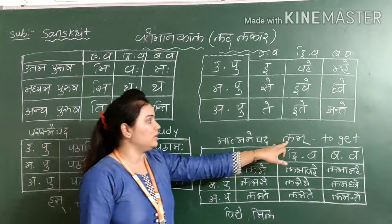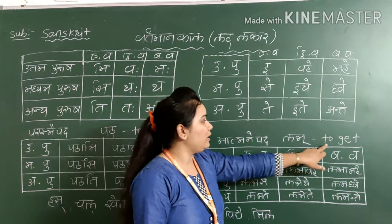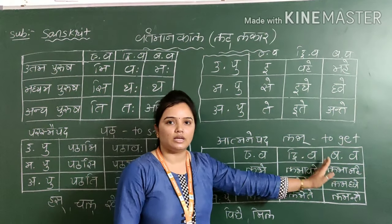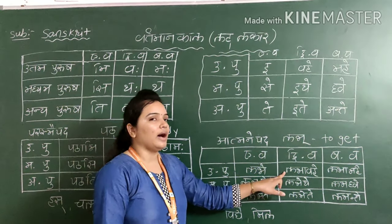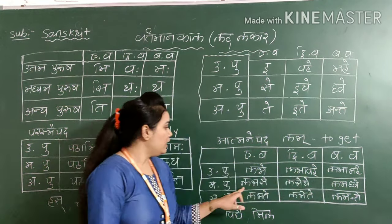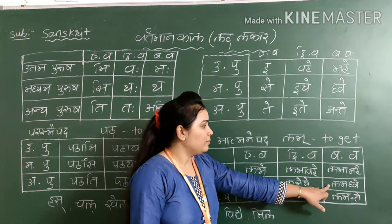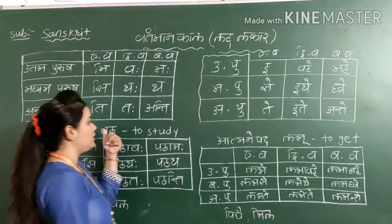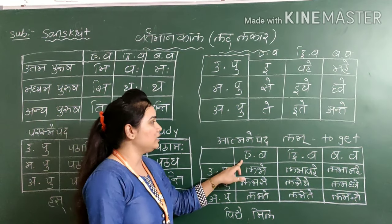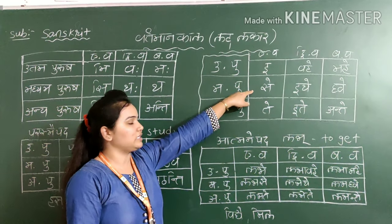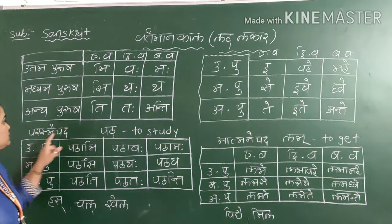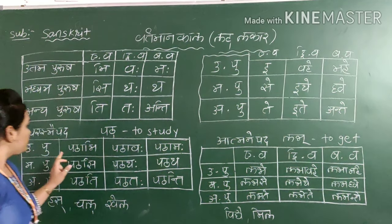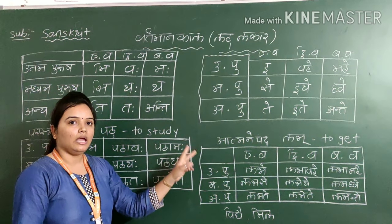Same like, you have to frame it with a word. Here, another word we will use — 'labh'. Labh means to get. So here, same: Uttam Purush, Madhyam Purush, Anya Purush, Ek Vachan, Dvivachan, Bahuvachan. So: labhe, labhavahe, labhamahe, labhathe, labhathe, labhatve, labhathe, labhathe, labhathe. Same as we have seen the Parasmapad word table, same like this.